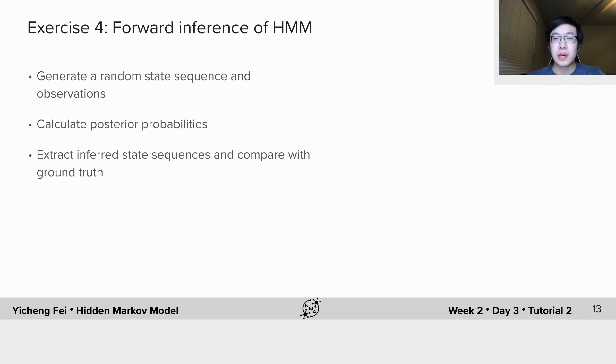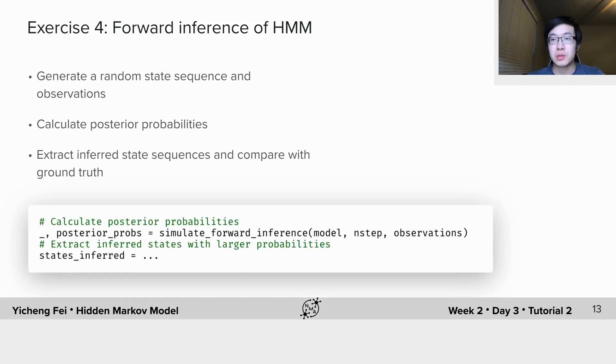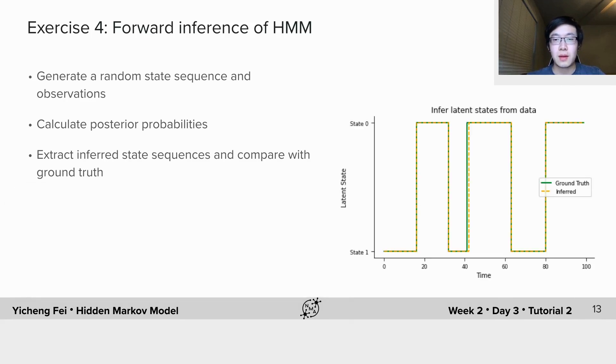You need to finish the code to extract inference states by choosing the one with higher posterior probability at each time. We've already provided some code to visualize the true state sequence together with the inferred ones. Like this.